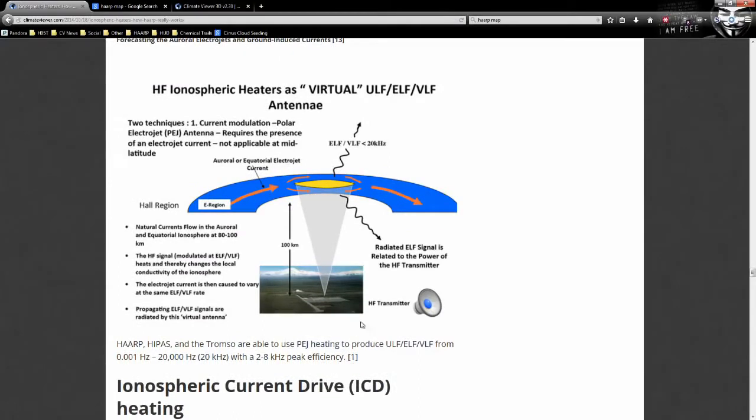This is how I just recently found this out. He had a great series of slides that I read through. And it turns out natural currents flow in the auroral and equatorial ionospheric ionosphere at 80 to 100 kilometers, the high frequency signal heats and thereby changes the local conductivity of the ionosphere.